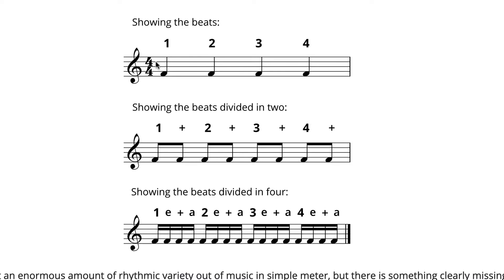Remember that for the time signature, the top number is the number of beats that we have — 4 beats — and the bottom number is the unit of time, the durational symbol we're going to use to represent the beat. So in this case, 4 beats and they look like quarter notes. We can see those 4 quarter notes represented with their 4 counts right here just after the time signature.